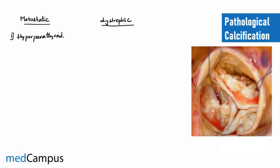Hyperparathyroidism includes primary, secondary, and tertiary forms. In primary hyperparathyroidism we have parathyroid hyperplasia or parathyroid tumors; in secondary and tertiary we have chronic kidney disease as an example. The next cause is bone metastasis — any malignancy metastasizing to the bone leads to osteolytic lesions, which release calcium into the blood, and this excess calcium gets deposited into tissues.